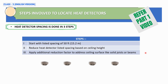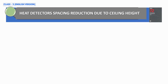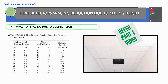This particular topic — the impact of solid joist and beam construction on heat detector spacing — is what we will look at in today's session. The table shown on your screen is used to reduce listed spacing to design spacing, as explained in detail in our earlier video.